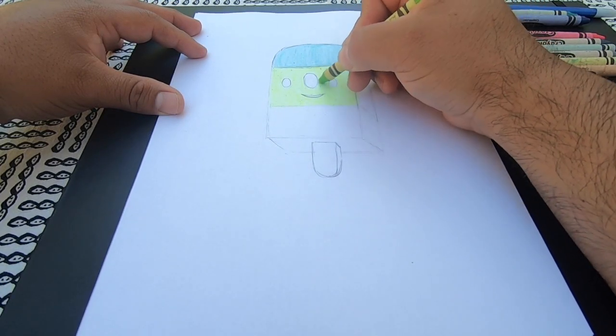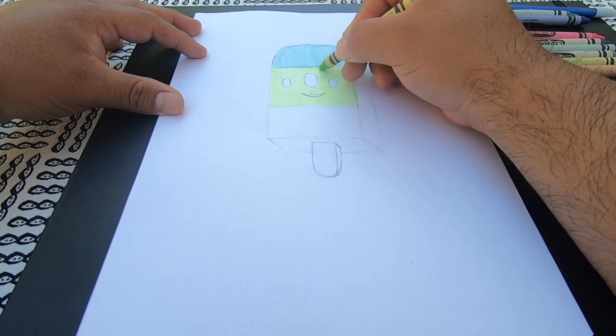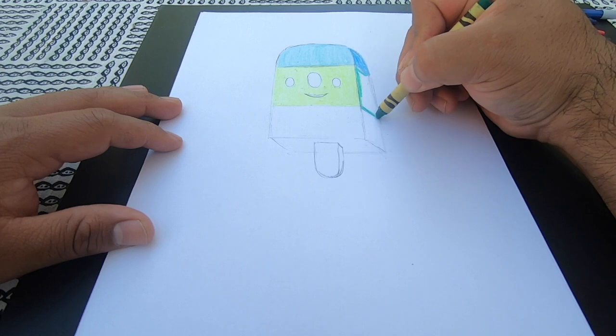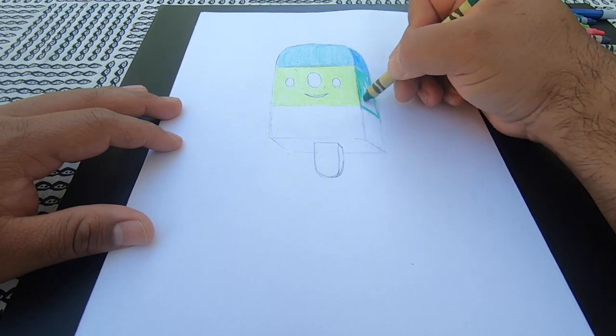En el lado izquierdo le agregue un color claro y en el lado derecho le agregue un color más oscuro. Esto dará la ilusión de tonos claros y oscuros.